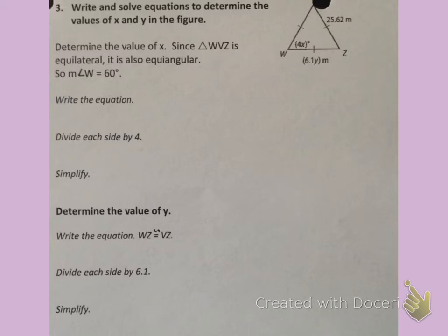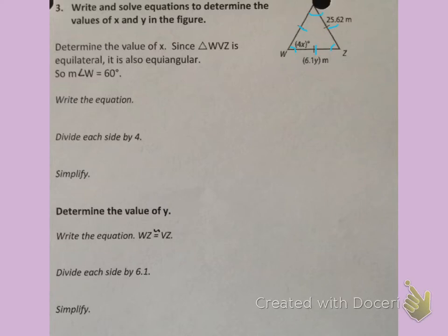Since triangle WVZ is equilateral — meaning all three sides are congruent, as shown by the three tick marks — it is also equiangular, so each of the three angles inside the triangle are congruent. The measure of angle W is 60 degrees because in an equilateral triangle, each of the angles measures 60 degrees. So 4X is in one of the corners, and 4X equals 60, because that corner is an angle with a measure of 60 degrees.